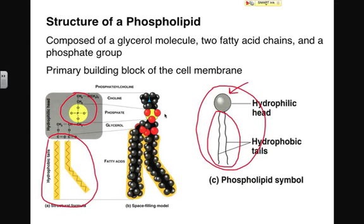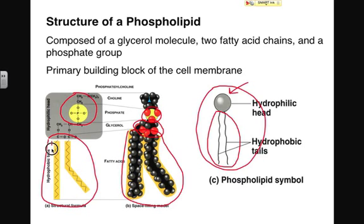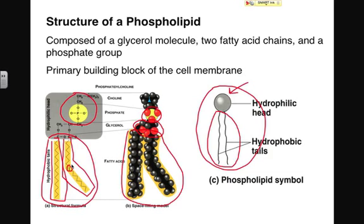If we look at a space-filling model, we have the same general idea: the phosphate head, here's glycerol — the part of the molecule that holds everything together — and here are the fatty acid tails. Notice that the fatty acid tails actually come in two different forms: one that is saturated, with no carbon-carbon double bonds, and one that is unsaturated, with one carbon-carbon double bond. So in general, a phospholipid is composed of a phosphate head and two fatty acid tails, which may be saturated, unsaturated, or even polyunsaturated, and glycerol holds the molecule together.